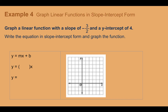Example 4: Graph a linear function with a slope of negative 3/2 and a y-intercept of 4. The equation is y equals negative 3/2x plus 4. First, plot a point at the y-intercept, 4 units up. Then use the slope: go down 3 and over 2. Plot that next point. Connect the two dots with a line and add arrows on each end to show it continues. That's the graph with slope negative 3/2 and y-intercept 4.